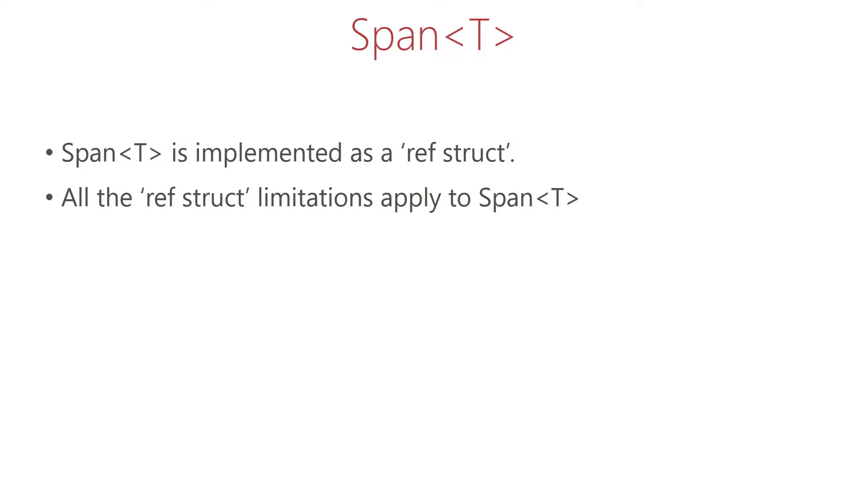Now I would like to point out that if you cannot live with those limitations, then there is another type called Memory which is very similar to Span, but it is a plain old struct without the ref keyword, so it can be a field of a type, it can be used as a parameter in an async method, and so on.